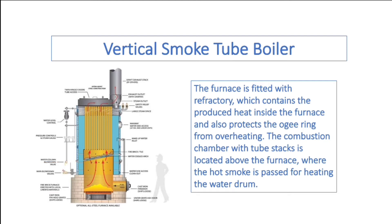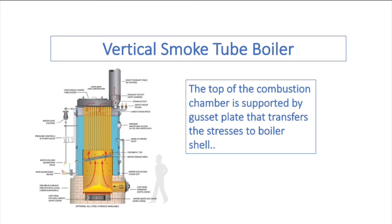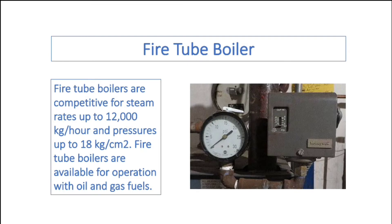The combustion chamber with tube stacks is located above the furnace, where the hot smoke is passed for heating the water drum. The top of the combustion chamber is supported by a gusset plate that transfers the stresses to the boiler shell. The fire tube boilers are competitive for steam rates up to 12,000 kg per hour and pressures up to 18 kg/cm². Fire tube boilers are available for operation with oil and gas fuels.